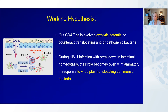To move this work forward, we developed some hypotheses. The first is that gut CD4 T cells potentially evolved cytolytic potential to counteract translocating or pathogenic bacteria. In a normal gut, there's very little granzyme B expression in CD4 T cells, but upon exposure to bacteria this is very quickly upregulated. We further hypothesized that during HIV infection, with the breakdown in intestinal immune homeostasis and microbial translocation, the role of these cells could become overtly inflammatory and exacerbated due to exposure to both virus and bacteria, resulting in a chronic increase in granzyme B expression.